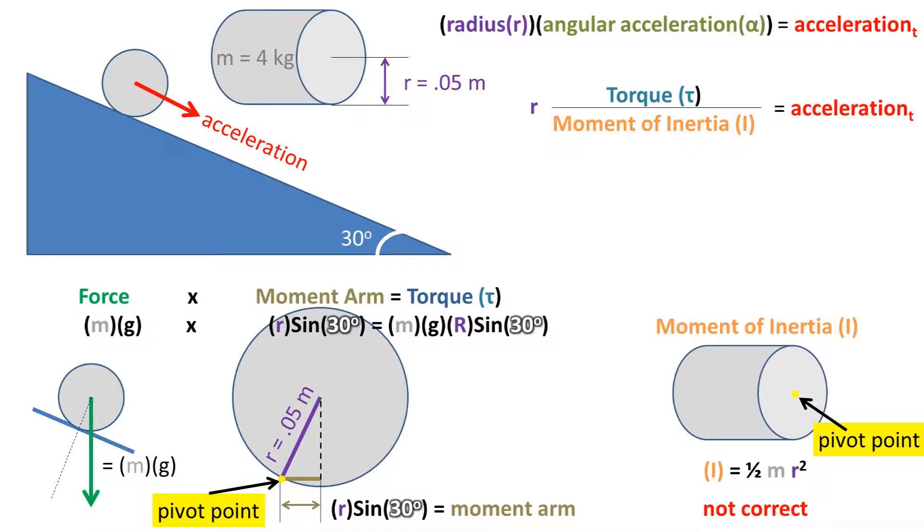Now, we must find the moment of inertia. Well, the moment of inertia of a cylinder is one-half mass times radius squared, so it must be that, right? No, that is the moment of inertia about the center line that goes through the center of each circle face.